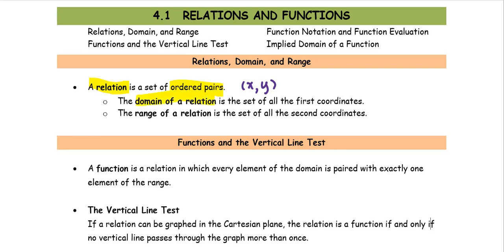The domain of a relation is the set of all the first coordinates or all of the x values. The range of a relation is the set of all the second coordinates or all of the y values.